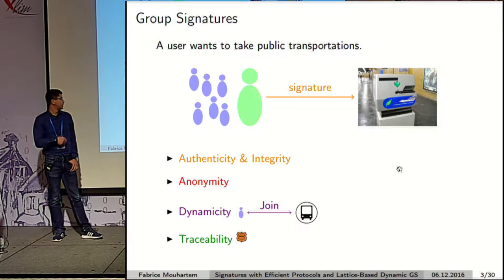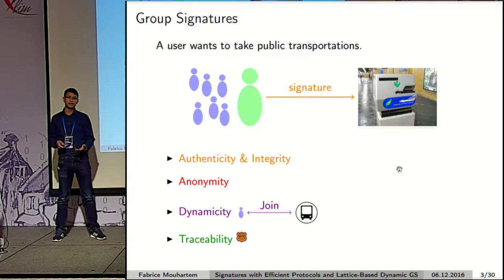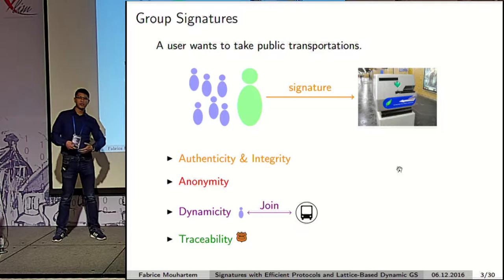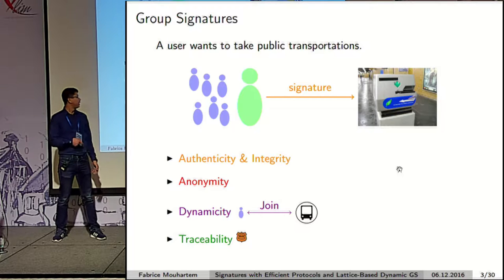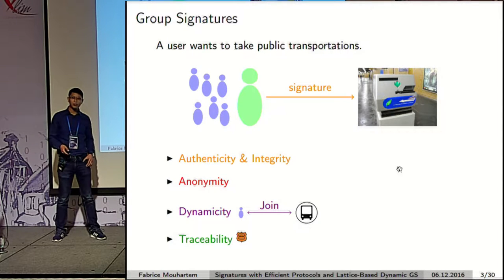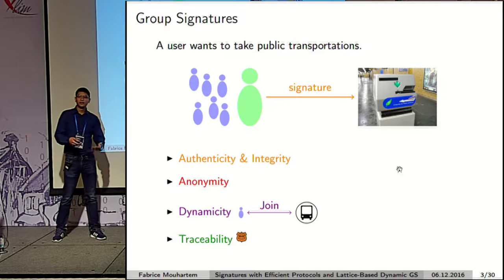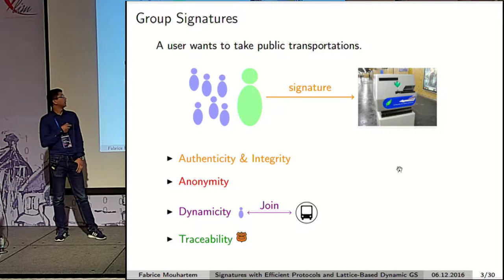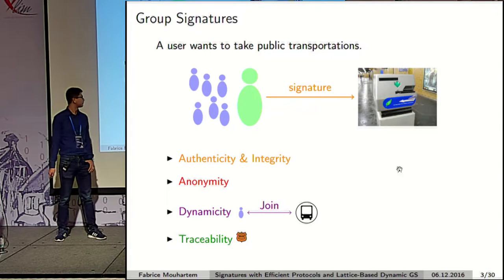Last but not least, we also want traceability, which means that in case a user misbehaves, an authority — for instance, the police — should be able to lift the anonymity of a given signature and trace back a user who misbehaved.